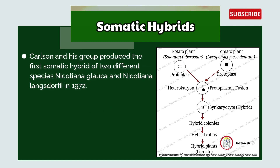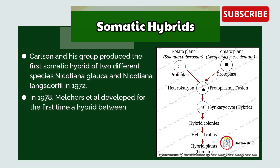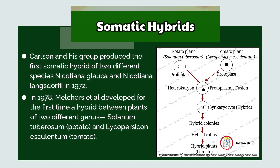Carlson and his group produced the first somatic hybrid of two different species, Nicotiana glauca and Nicotiana langsdorffii, in 1972. In 1978, Melchers developed for the first time a hybrid between plants of two different genera, Solanum tuberosum (potato) and Lycopersicon esculentum (tomato).